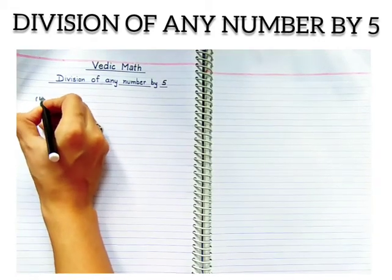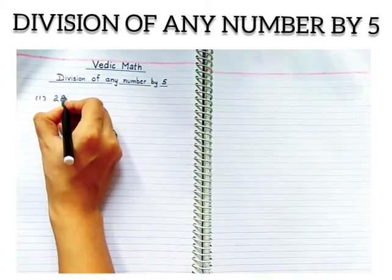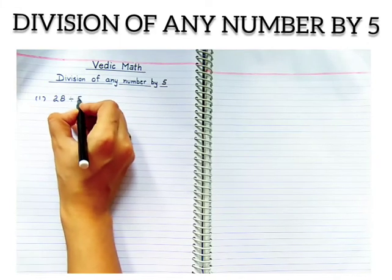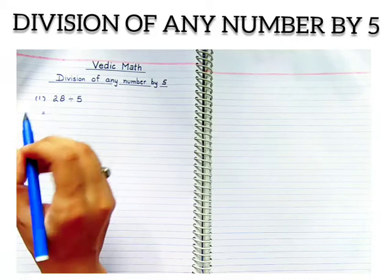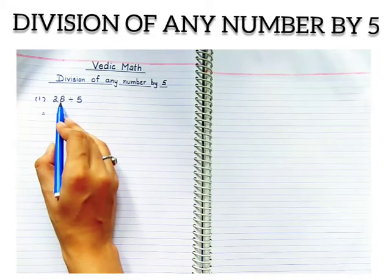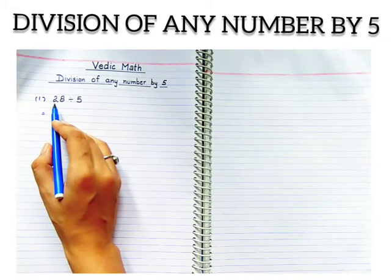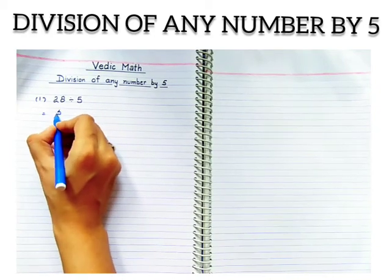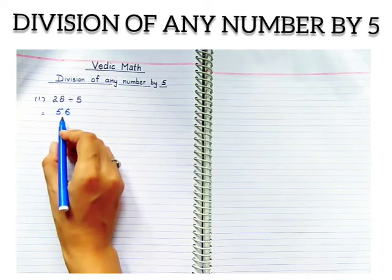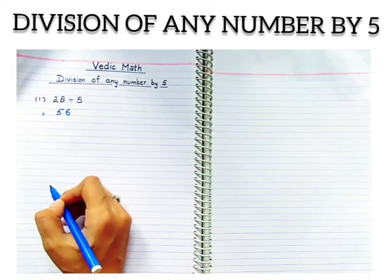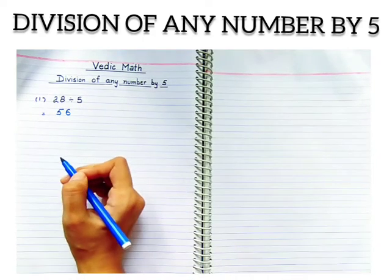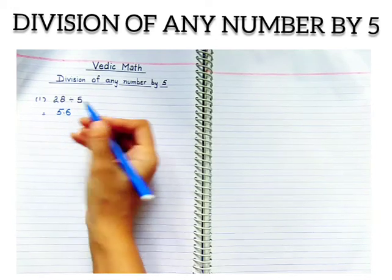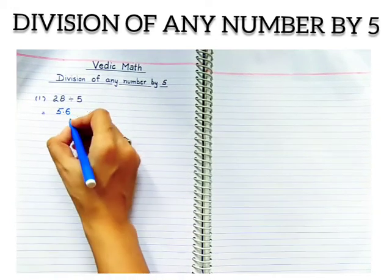It is in two steps. Step one: we have to double this number, that is, whatever the number given in the dividend, we have to double the number. Now it comes 56 after doubling 28. Step two: we have to put the point before one digit. So here is the answer: 5.6.